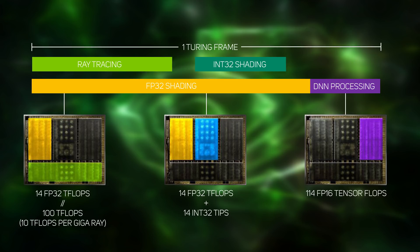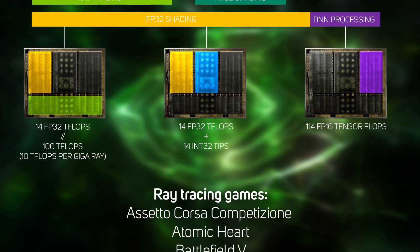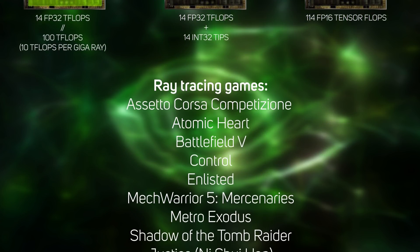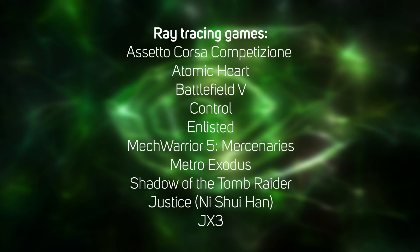Instead, Turing GPUs use a hybrid rendering model, using a combination of the CUDA cores to first rasterize the scene, followed by the RT cores adding in ray-traced lighting effects, with the Tensor Cores at the end doing a final pass of the new DLSS post-processing technique. So far, ten upcoming games have announced support for ray tracing, and no doubt there'll be more to follow. It'll also require DirectX ray tracing, which is expected to be rolled out in the October update for Windows 10.